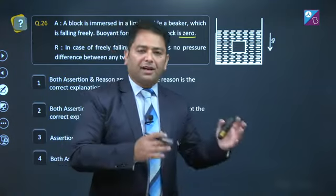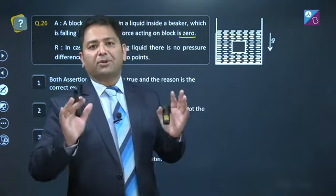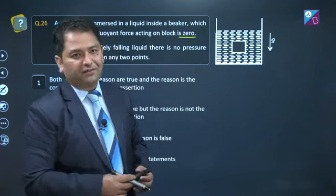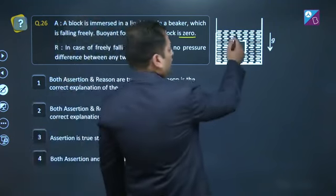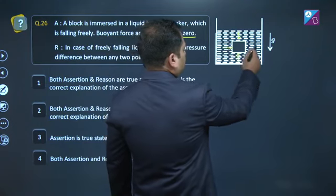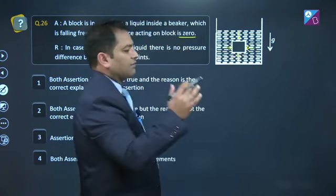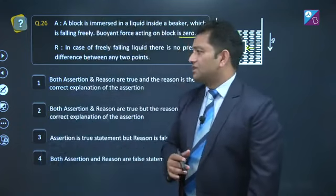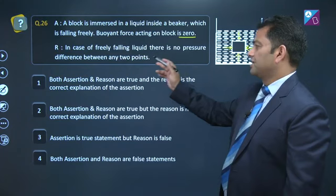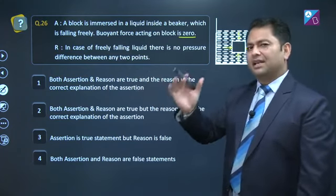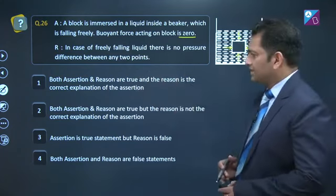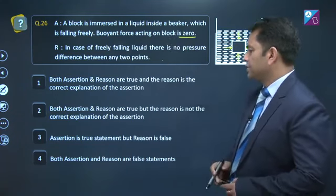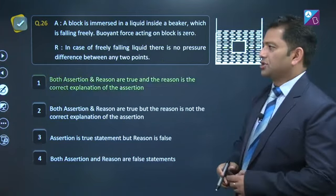Kyunki ultimately dekho, buoyant force ka formula we all memorize. But have you ever thought the cause, the origin of the buoyant force? Well, you find all the force due to the pressure from all the direction or usi ka resultant hai the buoyant force. Ab kyunki effective g is zero hai, so therefore pressure difference will be zero between any two points. That means the buoyant force will be zero. This is correct, this is correct and this is explaining assertion as well. Yahan ki option number 1.